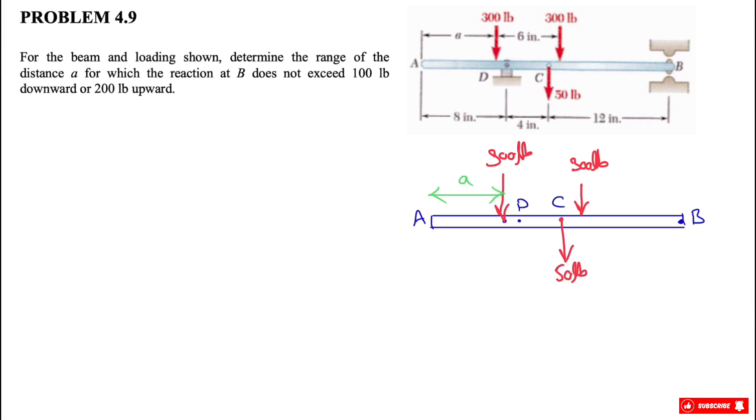All right, welcome back guys. So we have another question from Chapter 4 of Beer and Johnson textbook. We have this beam and three different loadings on the beam. We need to determine the range of the distance a for which the reaction at point B does not exceed 100 pounds downward and 200 pounds upward. So let's just start.